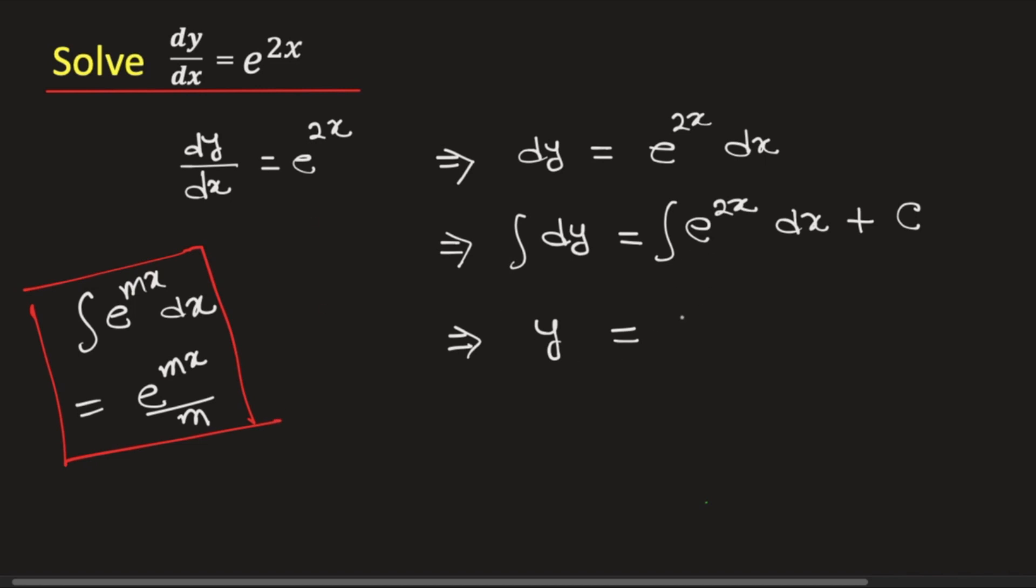So, this will be equal to e to the power 2x divided by 2 and then we have integration constant C.